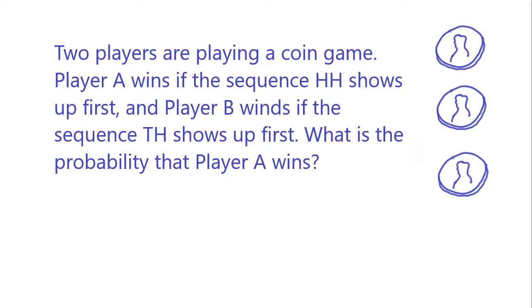Hello guys, we got another coin game today. Two players are playing a coin game. Player A wins if the sequence HH shows up first, and Player B wins if the sequence TH shows up first. H stands for head and T stands for tails. What is the probability that player A wins?